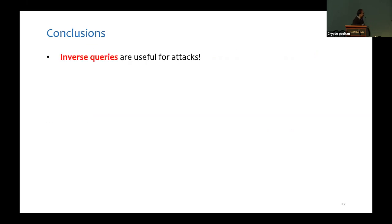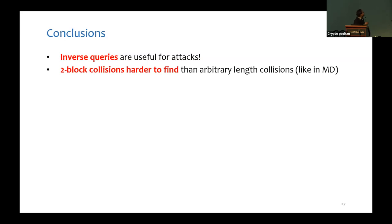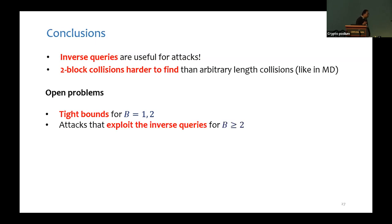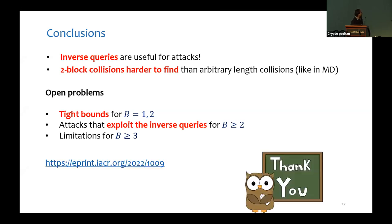There are two main takeaways from this work. First, the ability of an adversary to make inverse queries in the sponge construction is actually very useful for giving new attacks. In fact, this ability allows us to give an attack for sponge for which there is no analog for Merkle-Damgård. Second, just like Merkle-Damgård, even for sponge, finding short collisions like two-block collisions is provably harder to find than arbitrary length ones. Several open problems remain: tightening bounds for B equals one and two; the attack for B greater than or equal to 2 does not leverage inverse queries, and developing new attacks that do would be interesting; and proving new limitations for B greater than or equal to 3 is another possible direction. The full version of our paper is on ePrint.